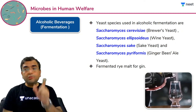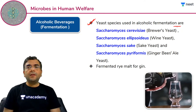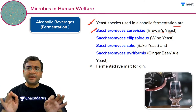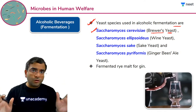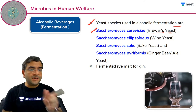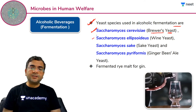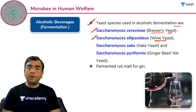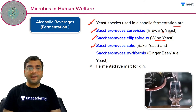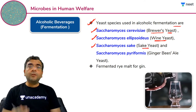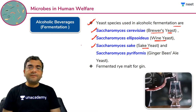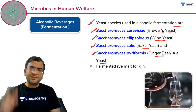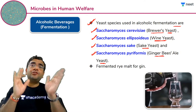Alcoholic beverages mein alag-alag type ke yeast use kiye jaate hain. Saccharomyces cerevisiae ko brewer's yeast kehte hain — isko baker's yeast bhi kaha jaata hai — bread ke formation mein aur generally alcoholic fermentation ke process mein iska utilization hota hai. Saccharomyces ellipsoideus ko wine yeast kaha jaata hai — yeh wine ka production karta hai. Phir Saccharomyces sake hai jo sake naami alcoholic drink ke production mein utilize hota hai. Aur Saccharomyces pyriformis jise ginger beer ya ale yeast kaha jaata hai. Genus toh Saccharomyces hi hai, species alag-alag hain.